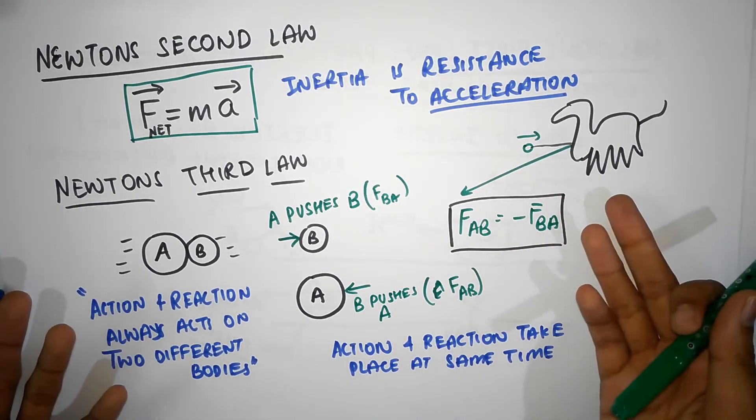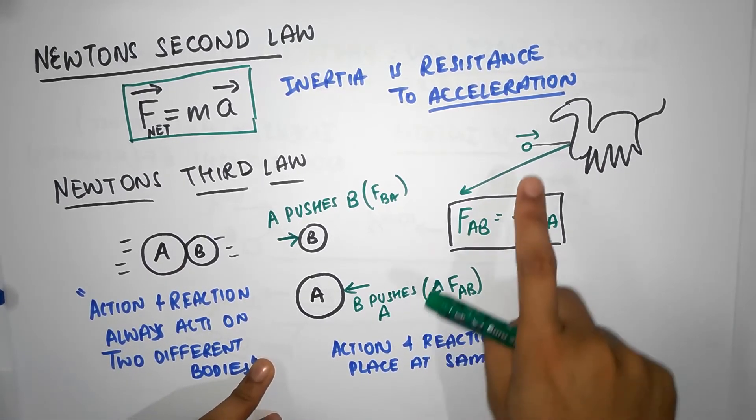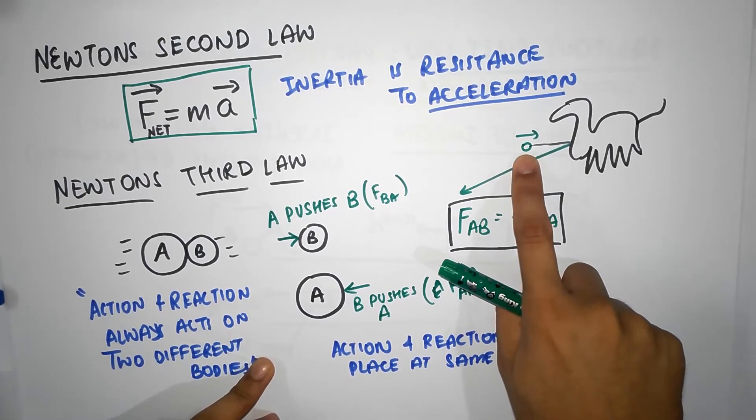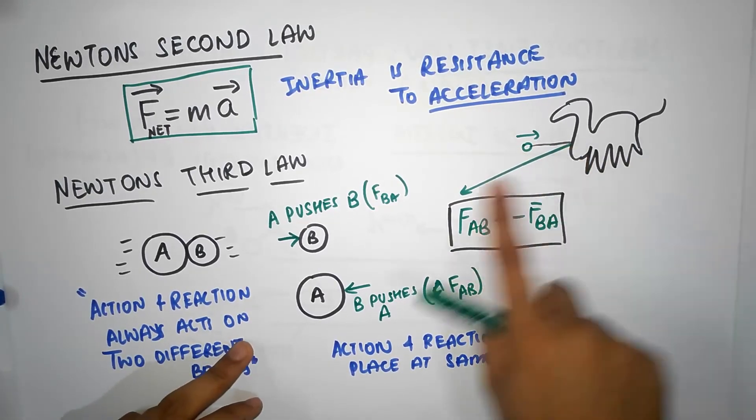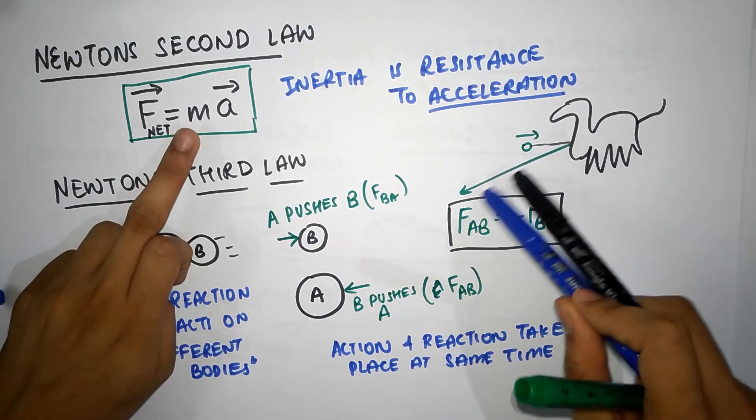So who put more force on whom? Well, Newton's third law says the two forces are equal. So the force the dinosaur puts on this guy is exactly the same as the force this guy puts on the dinosaur. The reason why this guy gets blasted off? Well, the force is the same. But this fellow has a very small mass.